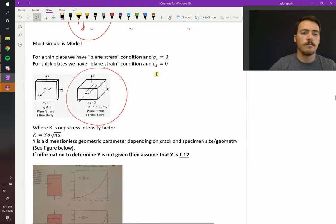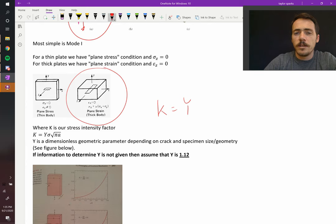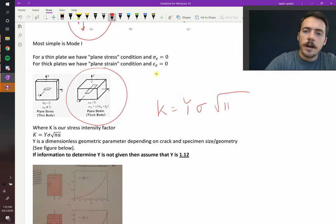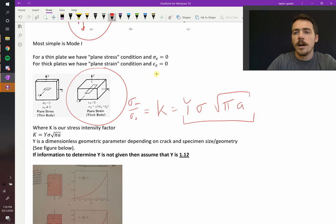And that has the following equation. K is equal to Y, which is a dimensionless geometric parameter, which depends on the crack and the specimen size and geometry, multiplied by the stress applied, multiplied by pi times the half crack length A. So, K is our stress intensity factor. Remember, this is equal to the maximum stress divided by the stress that you think you're applying, essentially what that is. So, it's the multiplier. This is saying that the multiplier that you're going to see is equal to some stress parameter, the applied stress, multiplied by some geometry, basically the size of your crack.